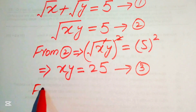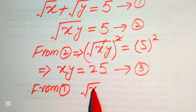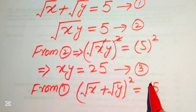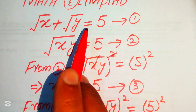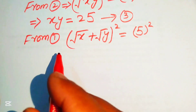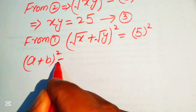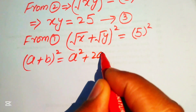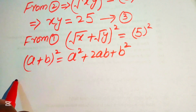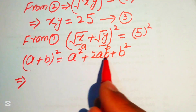Now we square both sides of equation number 1: square root of x plus square root of y, whole squared, equals 5 squared equals 25. We apply the algebraic formula: (a + b)² = a² + 2ab + b², where a = square root of x and b = square root of y.